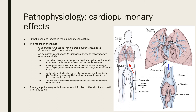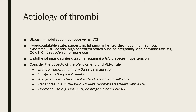Subsequent increases in pulmonary vascular resistance also lead to over-distension of the right ventricle, increased right ventricular end-diastolic pressure, and decreased right ventricular output. As the right ventricle fails, this results in decreased left ventricular filling and hence decreased left ventricular preload, and then decreased cardiac output. The end effect is increased heart rate with decreased blood pressure — it's through this process that pulmonary embolism can result in obstructive shock and death if left untreated.